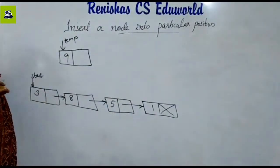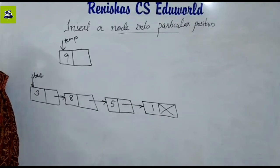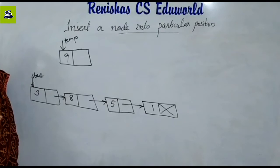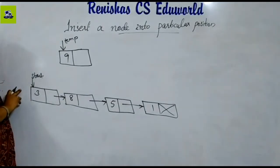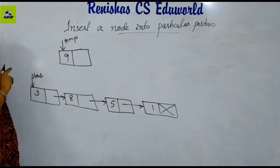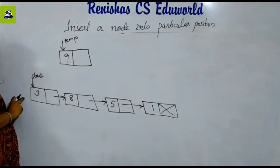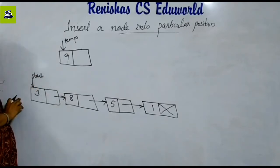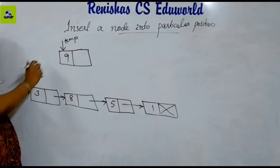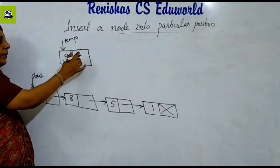Now we have 4 elements. We will insert at the third position. If the position is equal to 1, we insert the first node at the beginning. With a single linked list, we insert the first node at the start, and we insert at the third position.